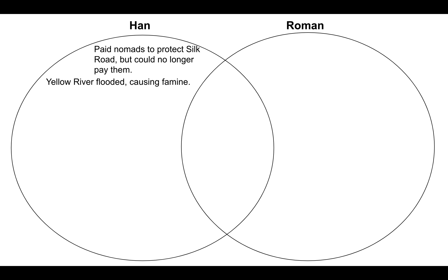We know that the Yellow River flooded. Remember, it's unpredictable, and it destroyed so many crops and villages, and that caused famine. Remember in the dynastic cycle that I showed you at the beginning of the Han Dynasty video, I said that you throw in a natural disaster or two, and if the dynasty can't fix it, then they're on their way out. They end up losing their mandate of heaven, and this famine led to their decline.